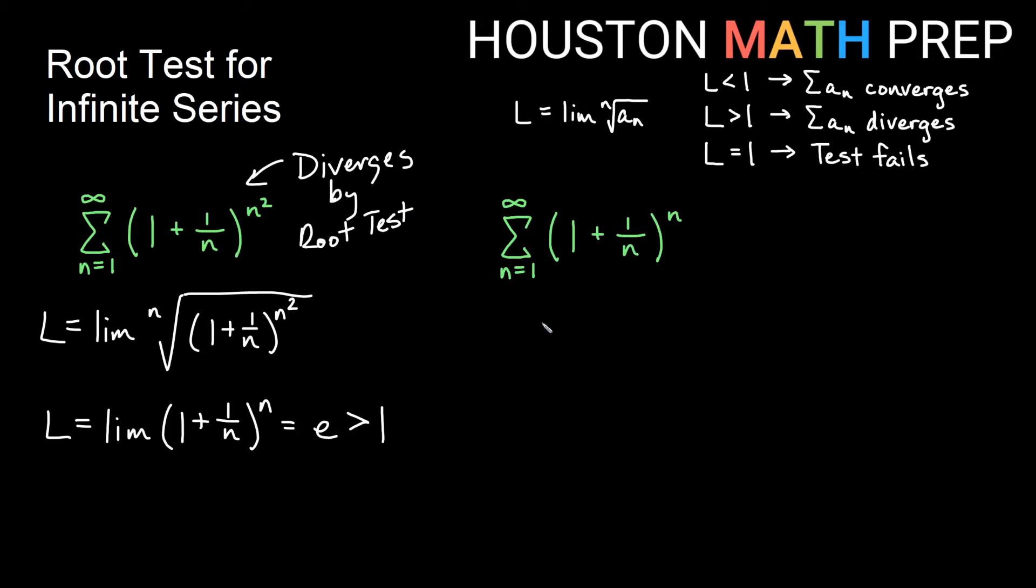Looking at this one, (1 + 1/n)^n is a limit that we know. But in the limit for the root test, we want to take the nth root of that thing. So taking the nth root of (1 + 1/n)^n is going to get rid of the nth power as well. So we will get the limit then of simply 1 + 1/n.